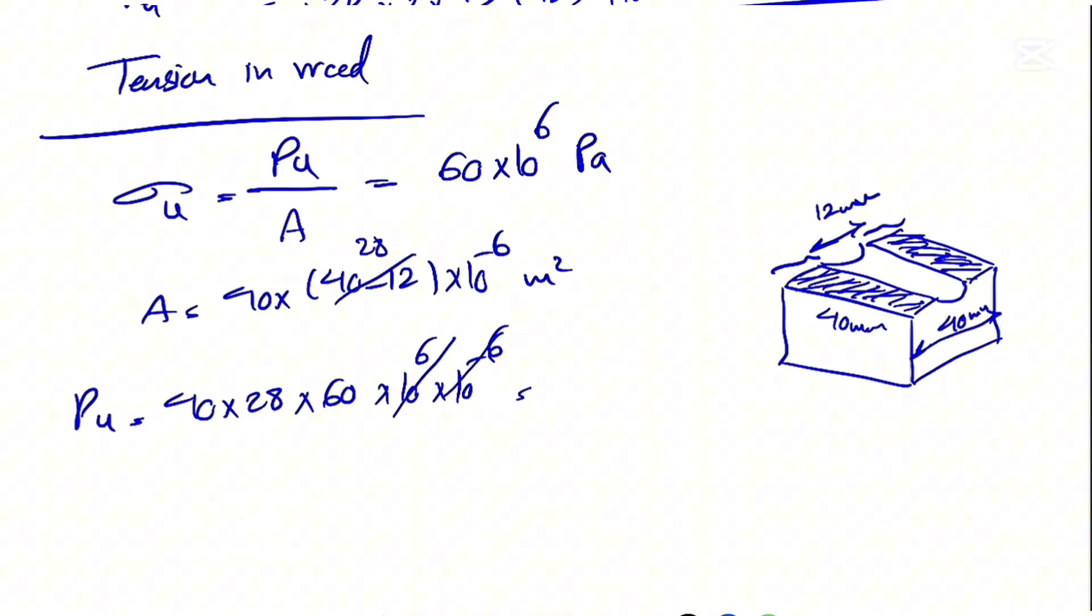Our A would be 40 times (40 minus 12), which represents these two sides, times 10^-6, since everything is in millimeters, so that way we can get meters squared. And we know this is equal to the tension in wood, which is 60 megapascals, so 60 times 10^6 pascals.